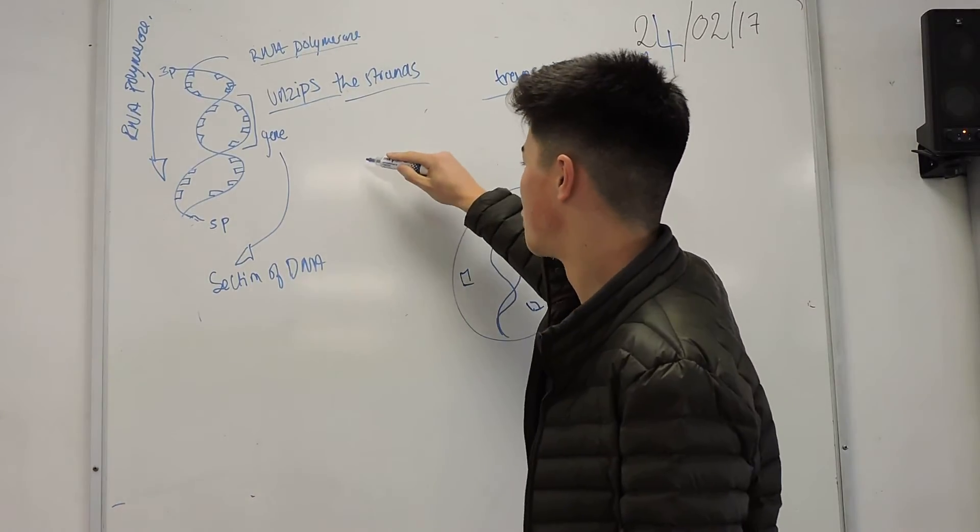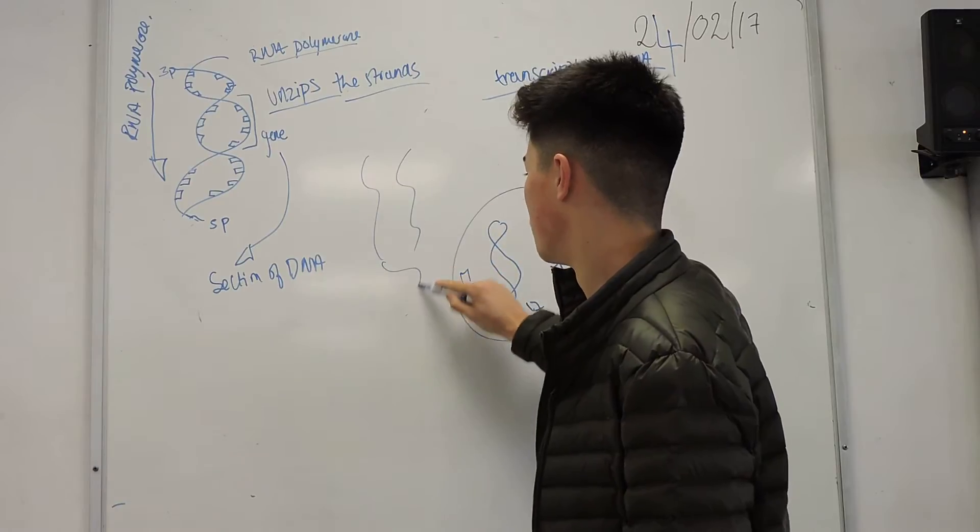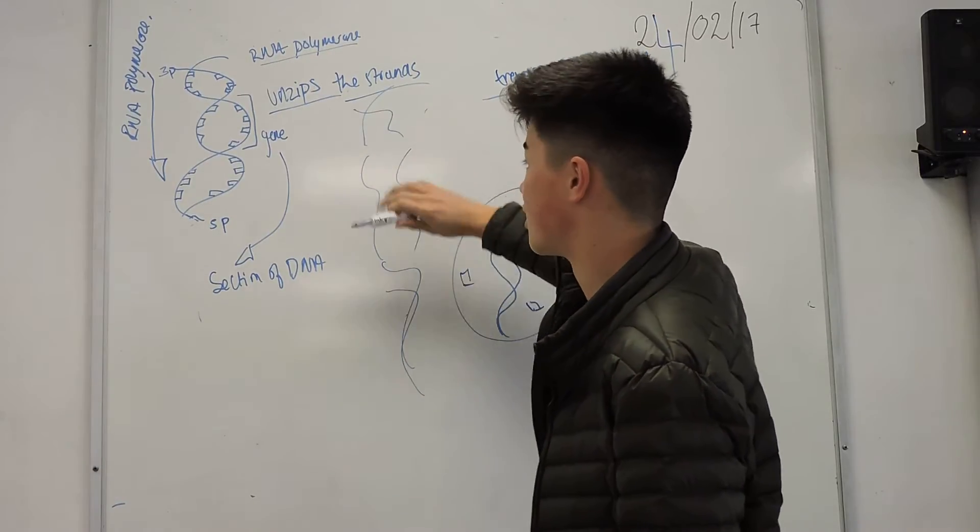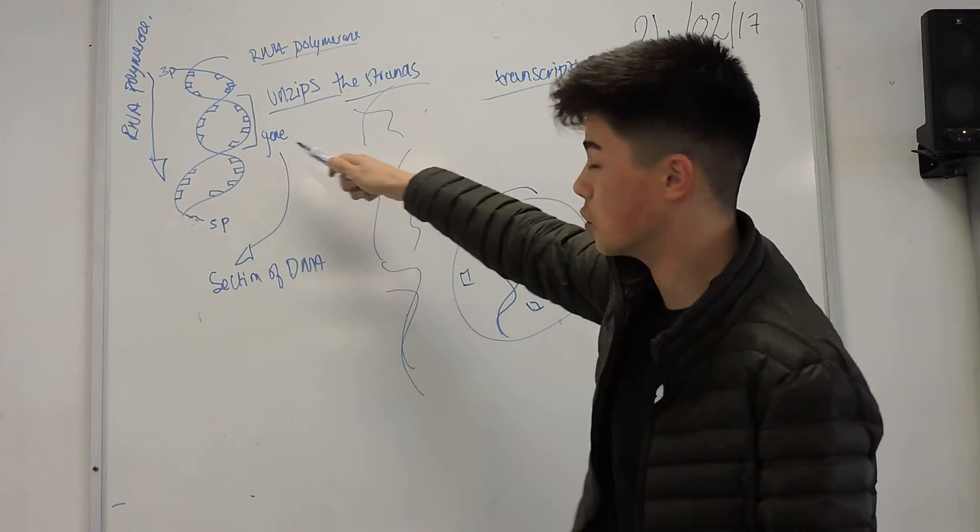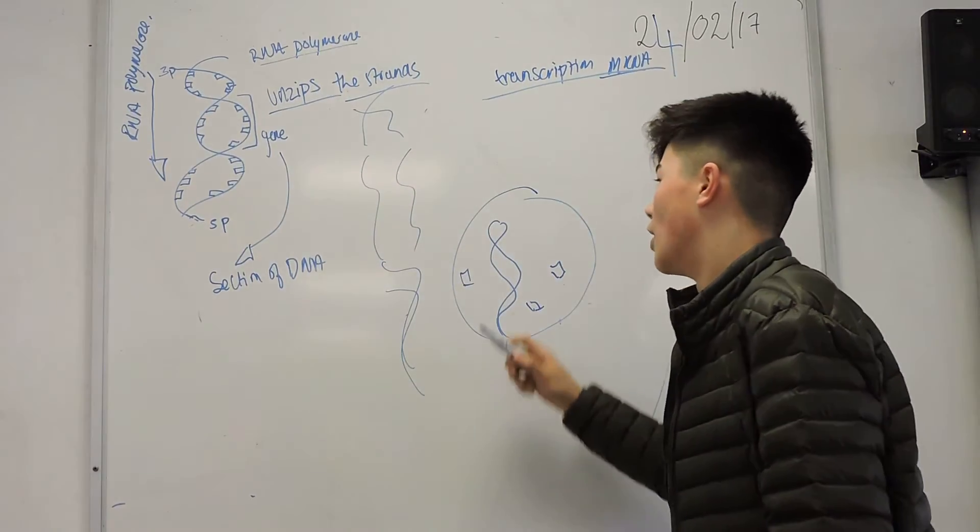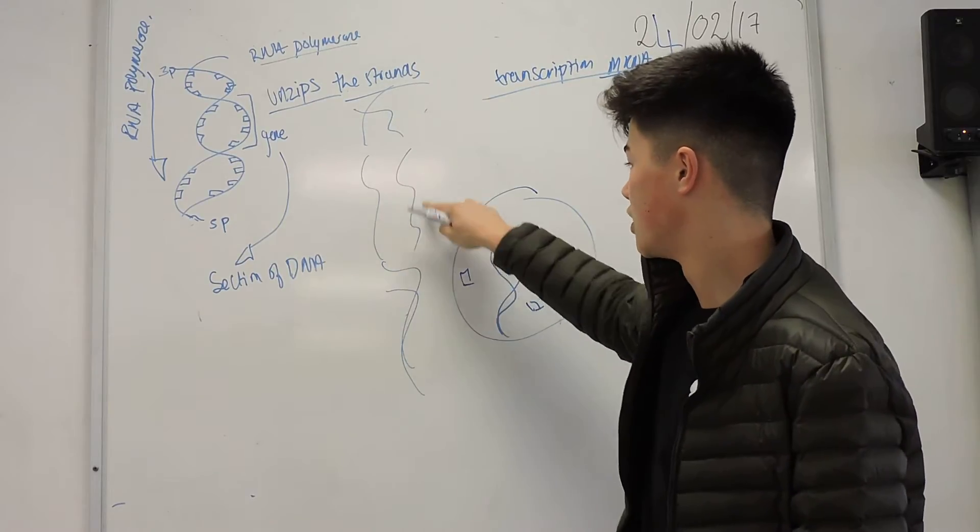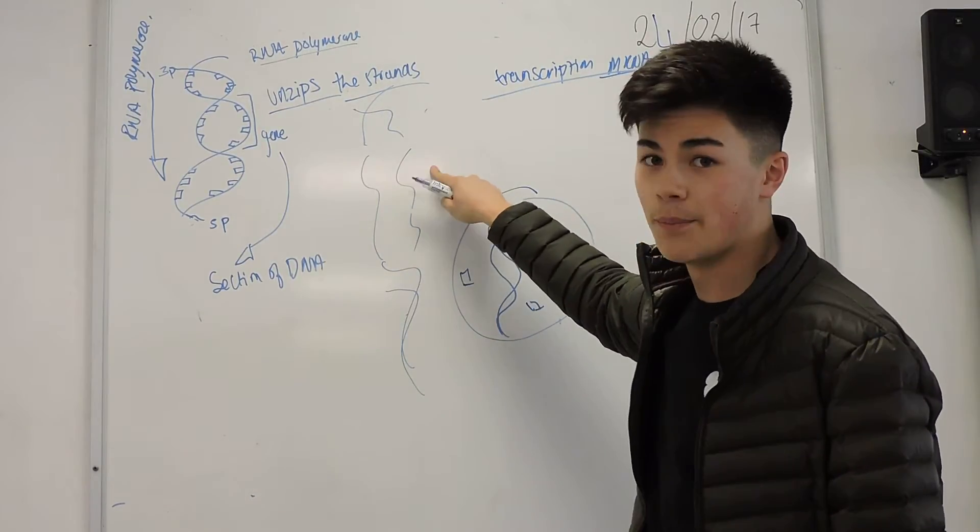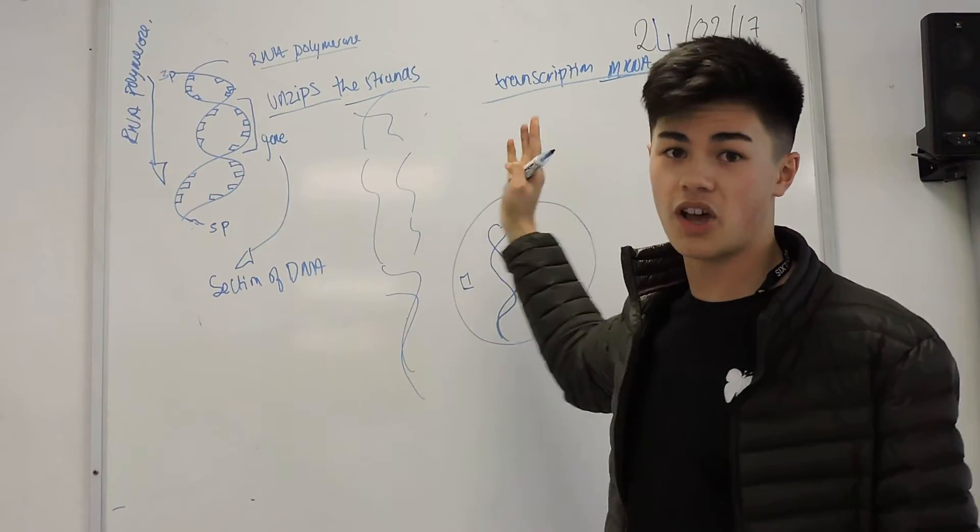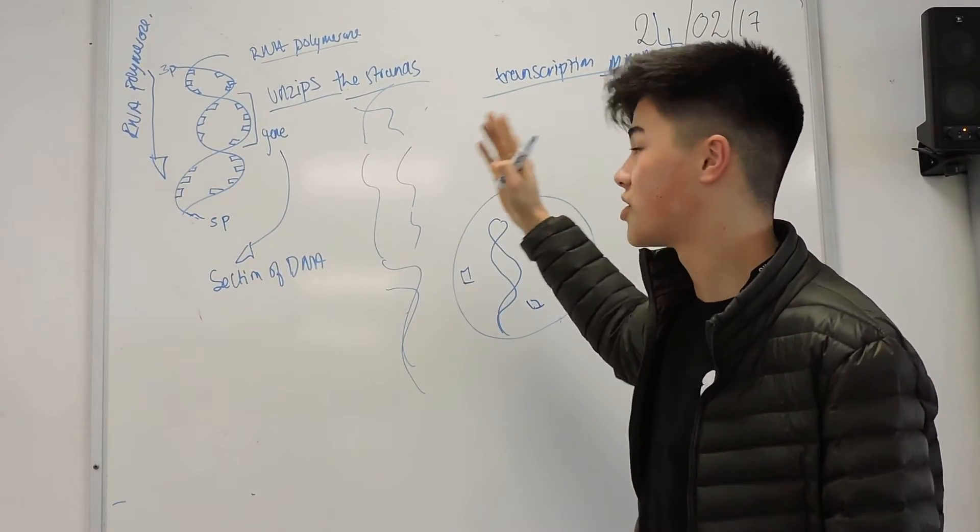It creates two strands like this, and then the remaining helix carries on. It's just a section of the actual DNA, which is called a gene. It will use one of these strands, either this one or this one—I'm going to choose this one today—as the template for RNA molecules to come along and make a messenger RNA molecule.